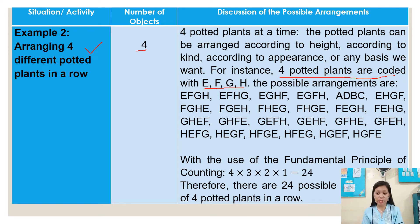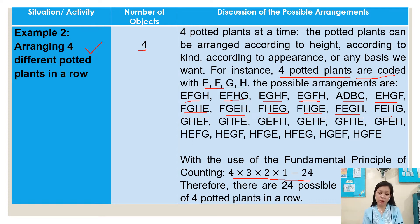The possible arrangements include: EFGH, EFHG, EGHF, EGFH, EHGF, FGHE, FGEH, FHEG, FHGE, FEGH, FEHG, and so on. With the use of the fundamental principle of counting, four times three times two times one equals 24. Therefore, there are 24 possible arrangements of four potted plants in a row.